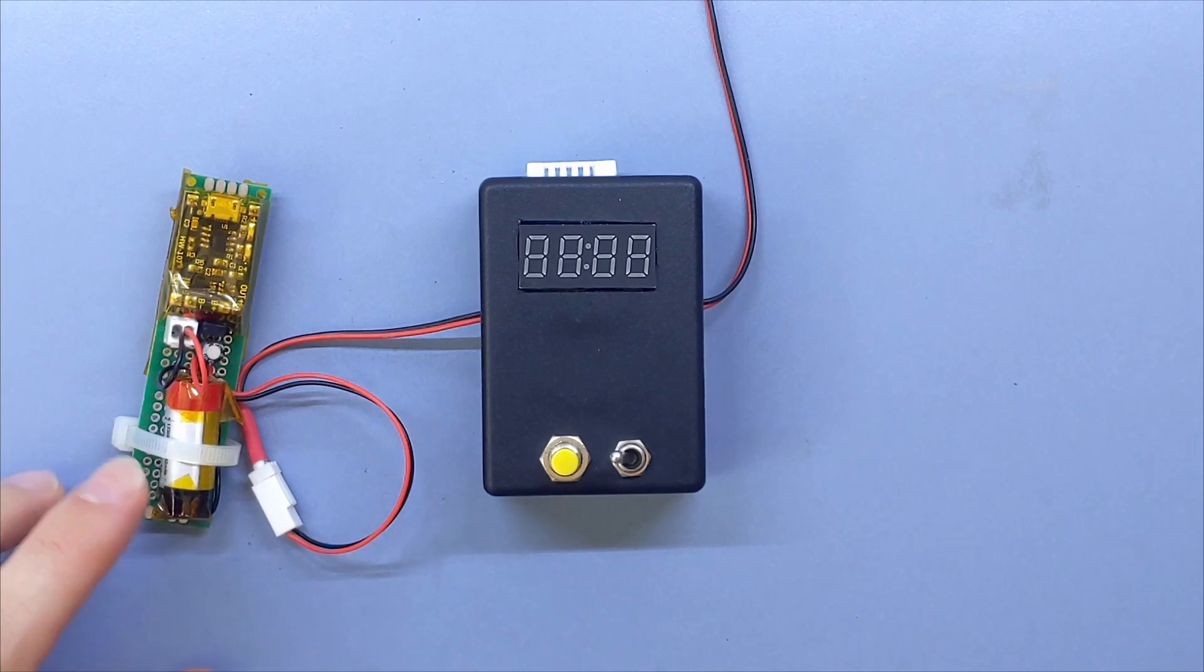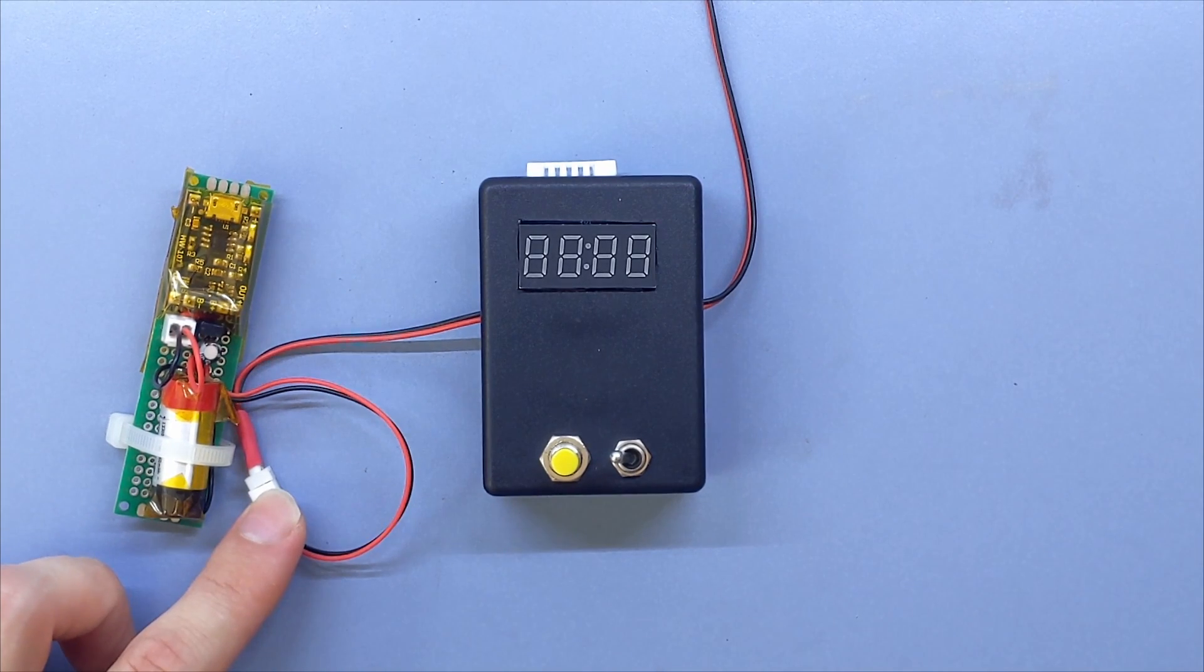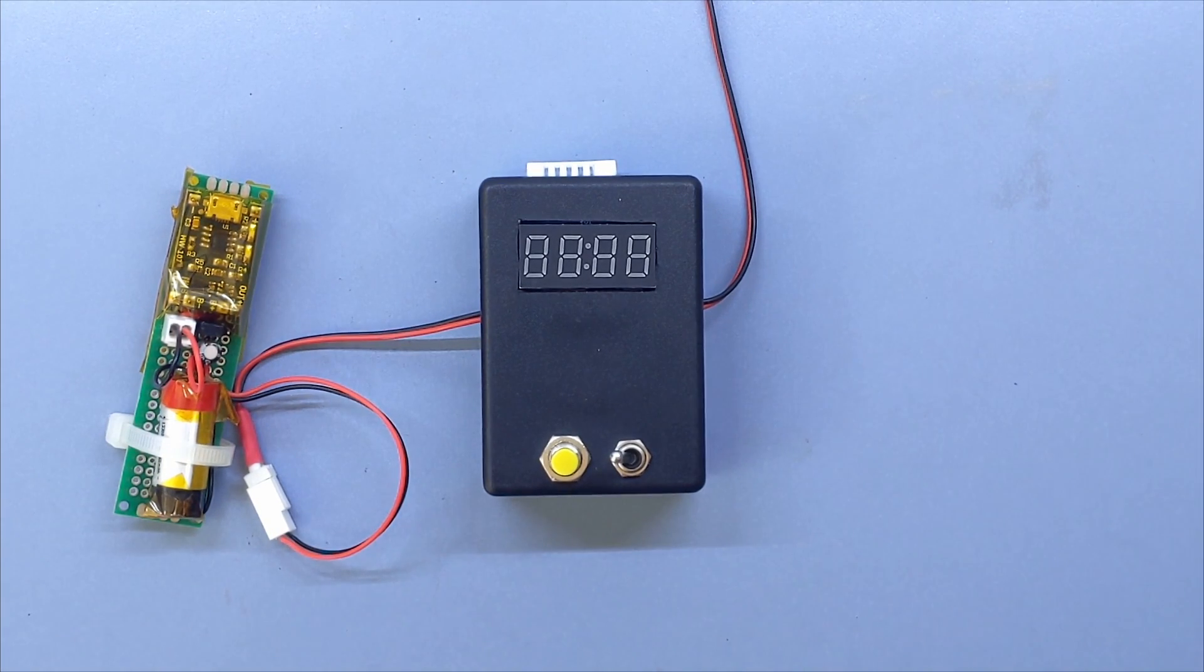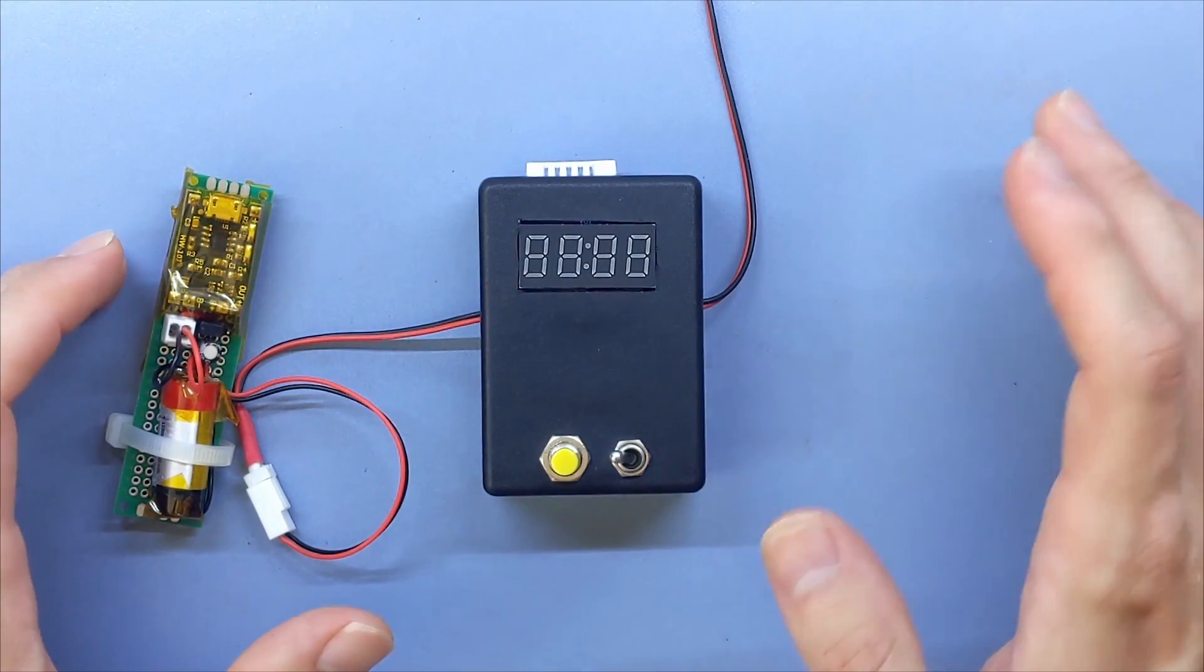As soon as 3.3V are supplied via this temporary connector, it starts measuring in 60-second intervals. In between measurements, the ESP inside will go to sleep to save power.